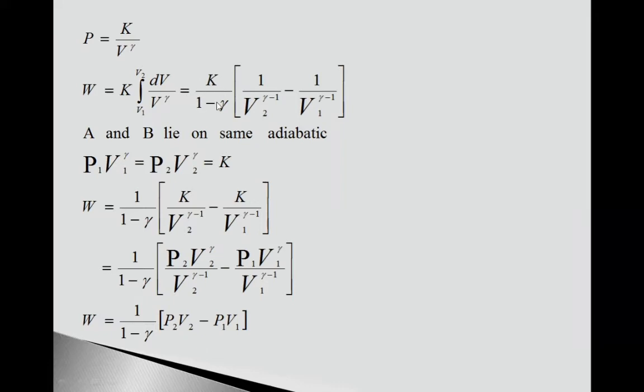So we have written here K upon (1-γ) in bracket. If we put this upper and lower limit values, we get 1 upon V2^(γ-1) minus 1 upon V1^(γ-1).